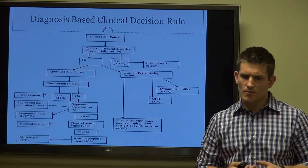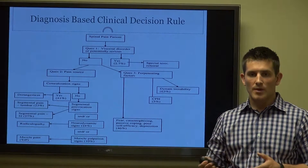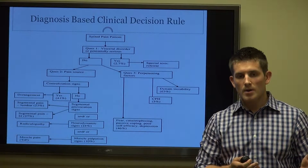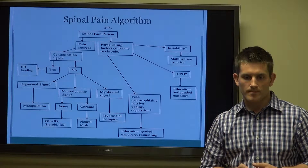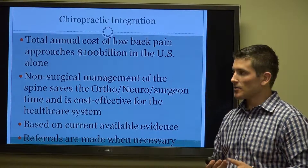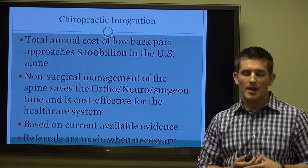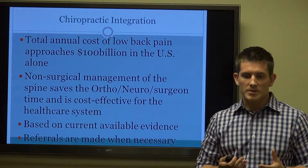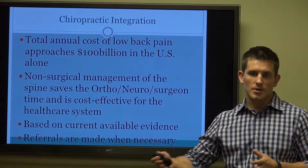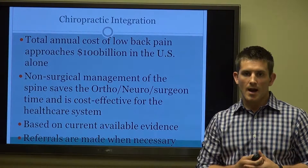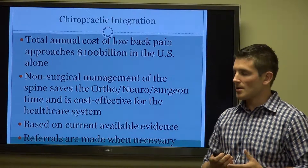With the diagnosis-based clinical decision rule, we come up with very simple algorithms. We're going to look to rule out the red flags first, identify the pain generator — number one being the disc and nerve root — and then look towards the facets, the SI joint, and possibly muscles as well. In terms of chiropractic integration, the total annual cost of low back pain approaches $100 billion in the United States. The non-surgical management of the spine saves orthopedists and neurosurgeons time. If it's not a surgical case, go to a non-surgical specialist who can potentially help or get you to the surgeon when needed. Our evaluations are based on current available evidence, and referrals are made when necessary.